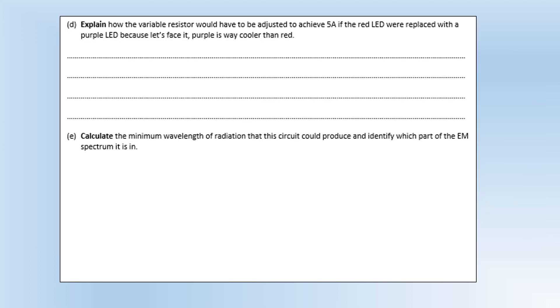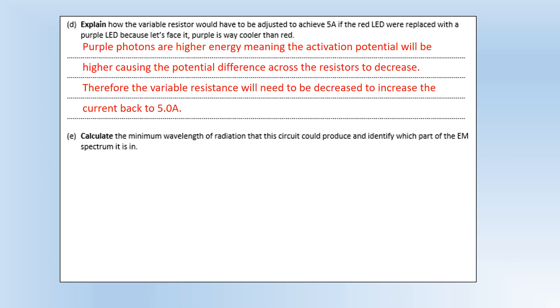Okay, so explain how the variable resistor would have to be adjusted to achieve 5 amps if the red LED were replaced with a purple LED, because let's face it, purple is way cooler than red. So the first thing is purple photons are higher energy because they are higher frequency, and that would mean the activation potential would be higher. And that causes the potential difference across the resistors to decrease because it's a potential divider. So therefore the variable resistance will need to be decreased to increase the current back to 5 amps again.